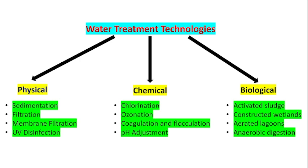Water treatment technologies fall into three categories: physical, chemical, and biological. Physical methods include sedimentation, filtration, membrane filtration, and UV disinfection. Chemical methods include chlorination, flocculation, coagulation, and pH adjustment. Biological methods include activated sludge, constructed wetlands, aerated lagoons, and anaerobic digestion. Many methods of water treatment technologies are available today.